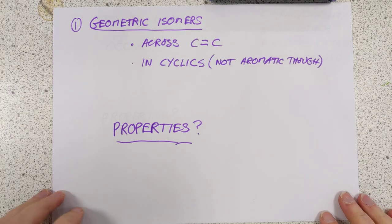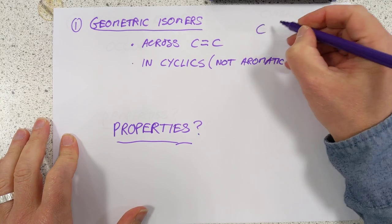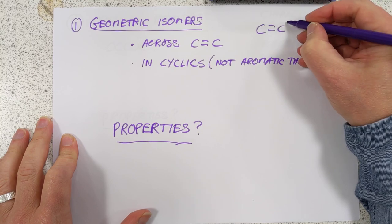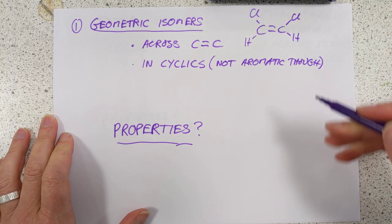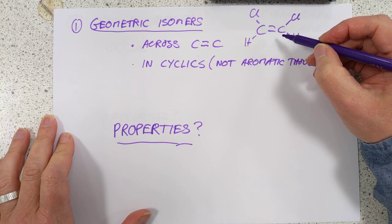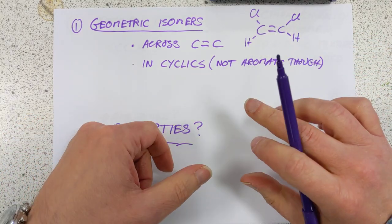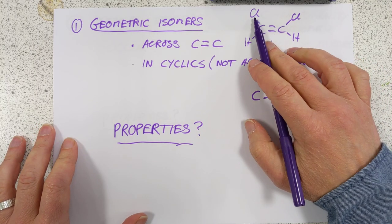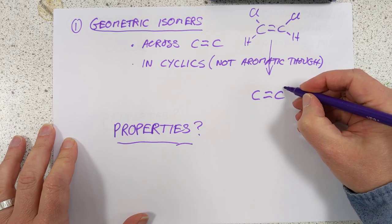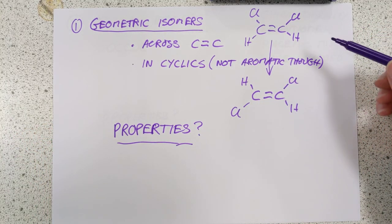We'll use that first sheet as a summary at the end. Geometric isomers occur across a carbon-carbon double bond and also in cyclic singly-bonded circles. For example, if we had dichloroethene, we could have a chlorine here, a hydrogen here, a chlorine here, and a hydrogen here — that is option one. Because this bond is a double bond, and the pi bond stops this molecule from rotating, the molecule cannot rotate, which means we can have a different isomer. We can have 1,2-dichloroethene again, but this time with both chlorines on the same side. These are not the same molecule — these are examples of geometric isomers.